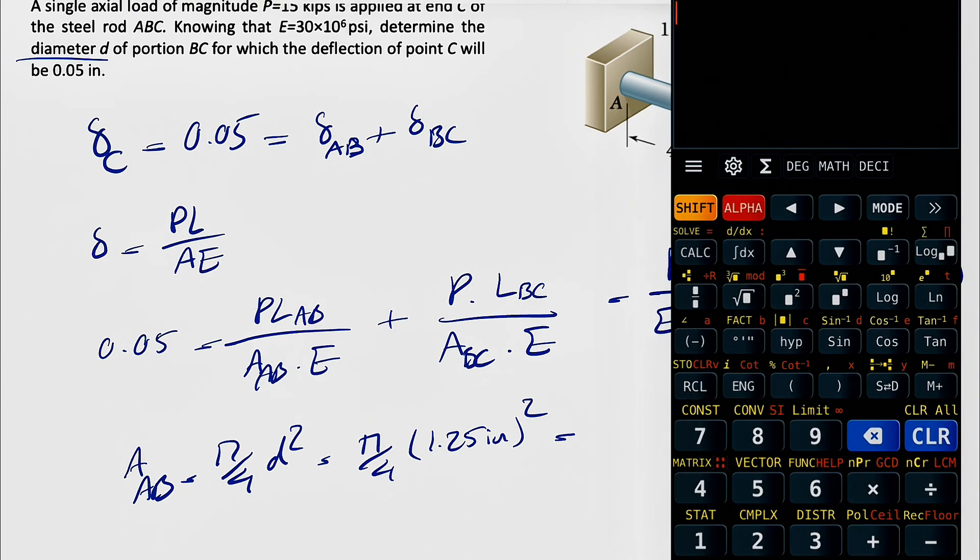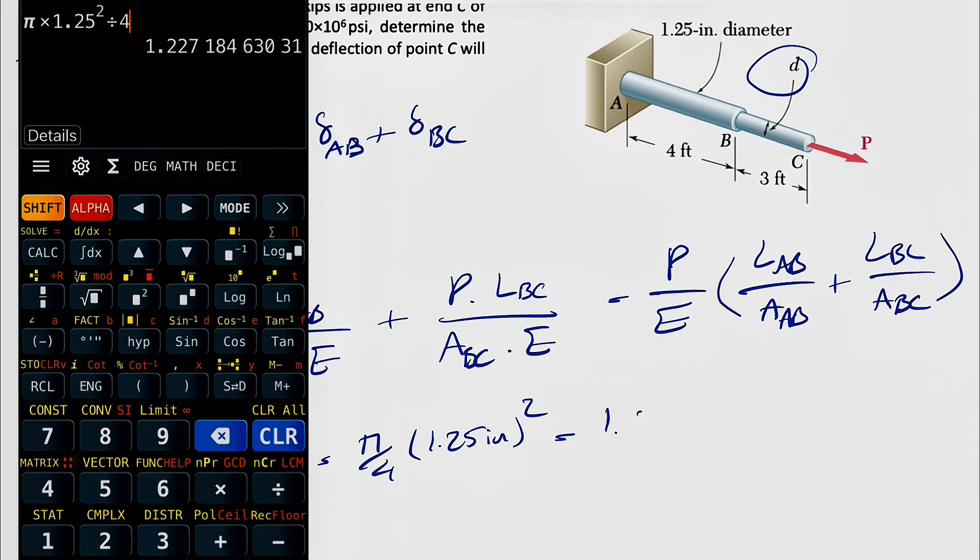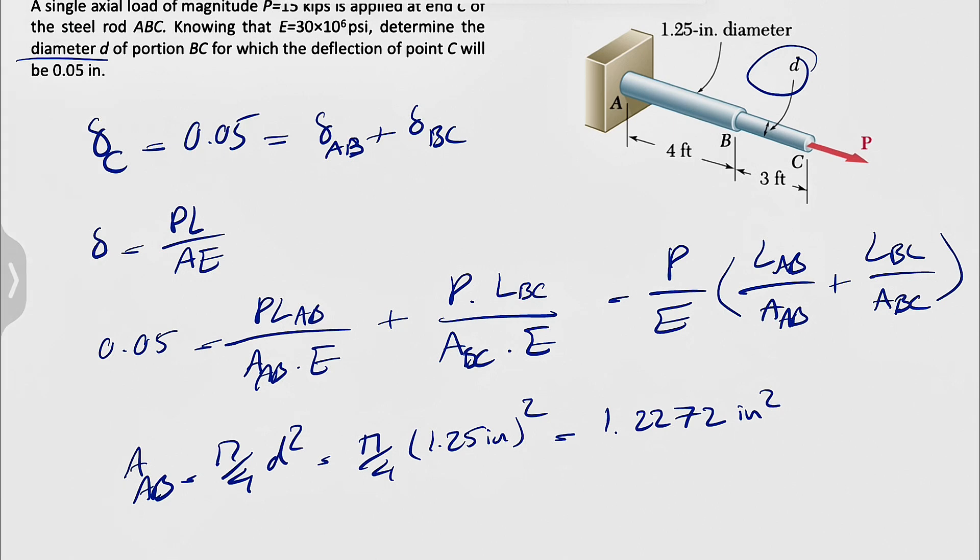So pi times 1.25 squared, divided by 4, this is going to be 1.2272 inches squared.